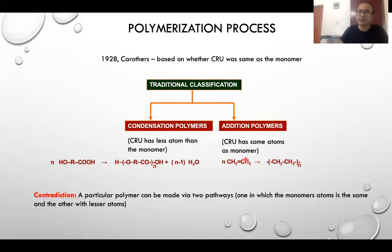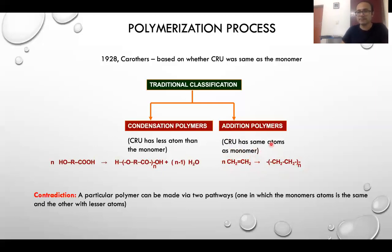In the example of polyethylene, if you look at the constitutional repeating unit, it has the same number of atoms as that of the monomer. That is why this type of polymer, where the constitutional repeating unit has the same number of atoms as the monomer, is classified under addition polymers or addition polymerization.